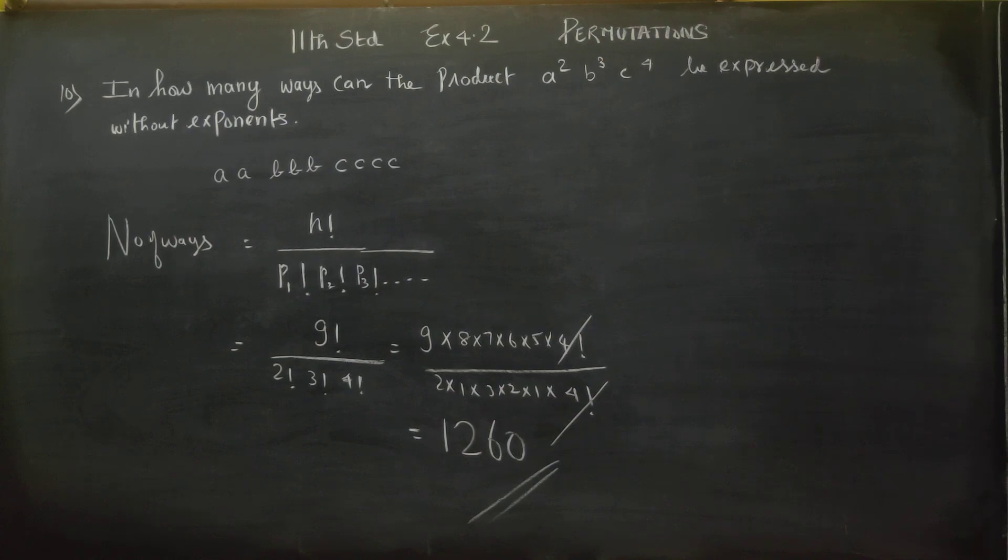Just the concept: n factorial by the repetitions factorial. That's the correct formula.